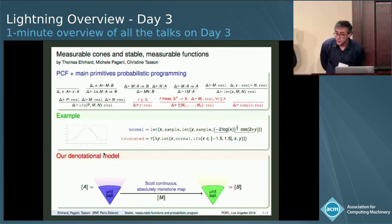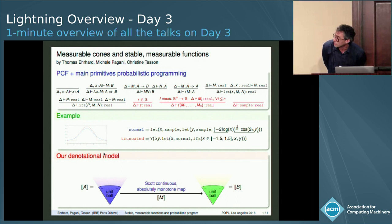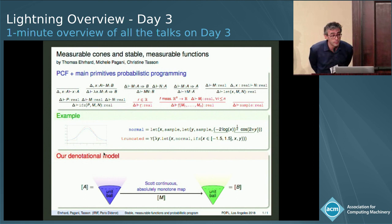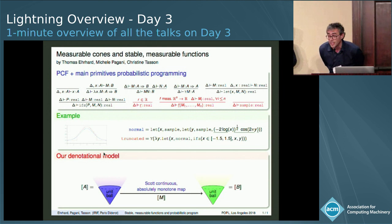I will present a new denotational model for probabilistic functional programming using a language like PCF with full recursion, a bunch of constants for dealing with real numbers and probabilistic distributions — discrete and continuous. In the model, we interpret types as cones, and the programs will be maps that are Scott continuous for recursion and measurable for sampling. The real novelty of the model is the introduction of the notion of absolute monotonicity, and how it relates to Girard-Berry stability in standard PCF and why it can play a role in denotational functional probabilistic programming. Come to my talk this afternoon.